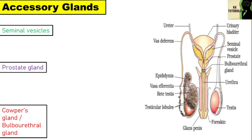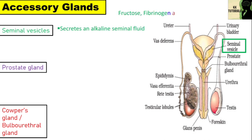The seminal vesicle is a pair of glands lying on the posterior side of the urinary bladder. It secretes an alkaline seminal fluid which contains fructose, fibrinogen and prostaglandins. Fructose provides energy for sperm movement, while fibrinogen coagulates the semen into a bolus for quick propulsion in the vagina.